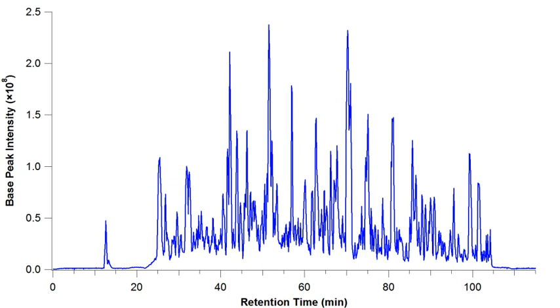This means that the base peak chromatogram represents the intensity of the most intense peak at every point in the analysis. Base peak chromatograms often have a cleaner look and thus are more informative than TIC chromatograms because the background is reduced by focusing on a single analyte at every point.